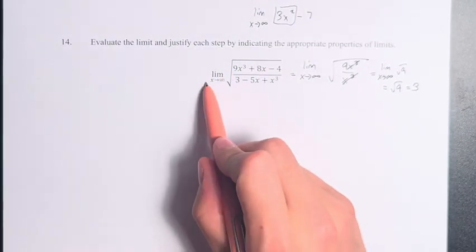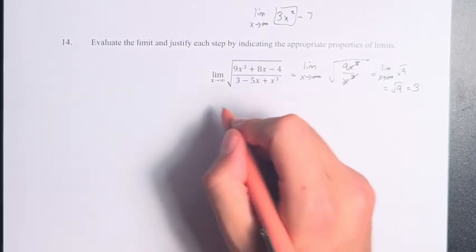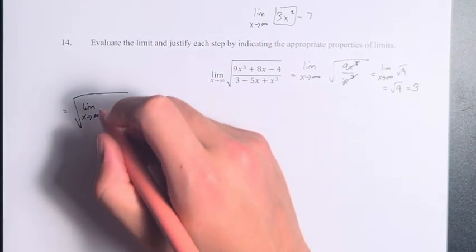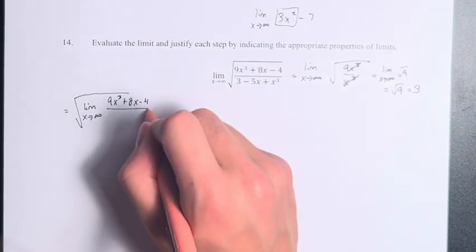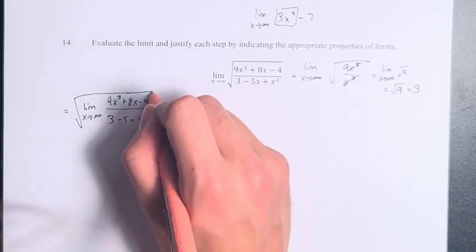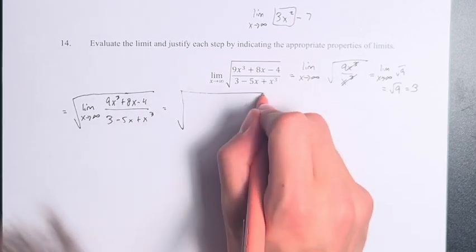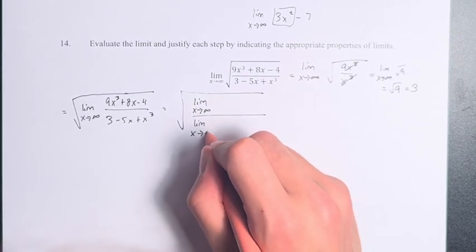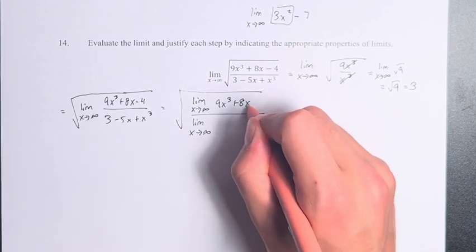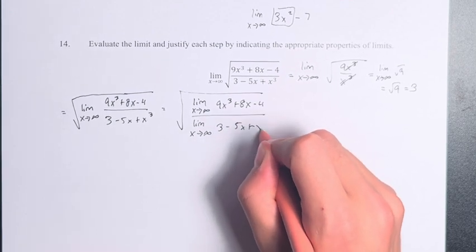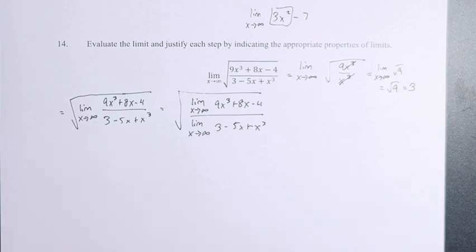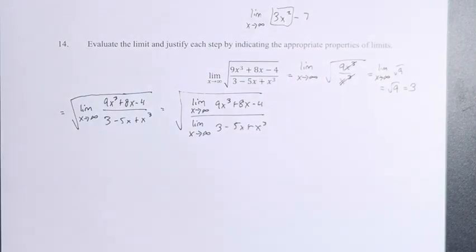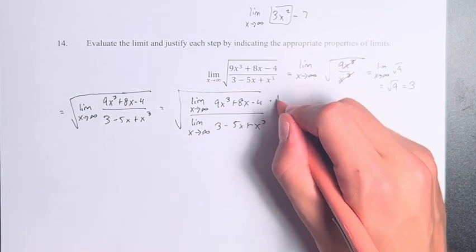We have the limit as x approaches infinity of all of this stuff inside the square root. We can say this equals the square root of the limit of everything inside: 9x cubed plus 8x minus 4 over 3 minus 5x plus x cubed. Then we apply the quotient rule for limits — the limit of the numerator divided by the limit of the denominator. Next, we multiply both numerator and denominator by 1 over the largest degree of x, which is 1 over x cubed.